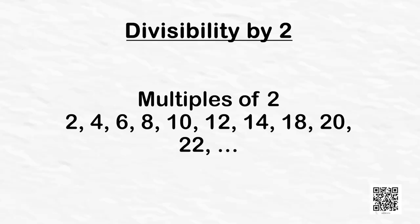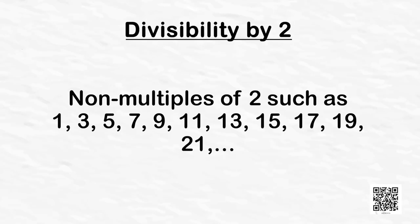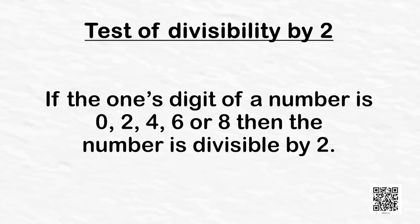Let's study more about divisibility by 2. Look at the multiples of 2: 2, 4, 6, 8, 10, 12, 14 and so on. And look at some of the non-multiples of 2: 1, 3, 5, 7, 9, 11, 13, 15 and so on. Observe that in all the multiples of 2, the ones digit is either 0, 2, 4, 6, or 8. Hence we get the test of divisibility by 2: if the ones digit of a number is 0, 2, 4, 6, or 8, then the number is divisible by 2.